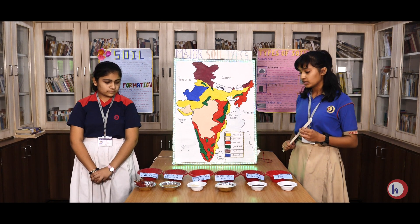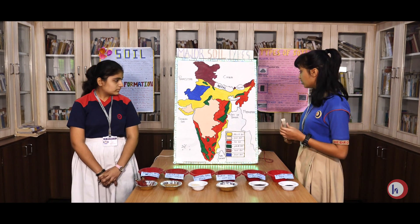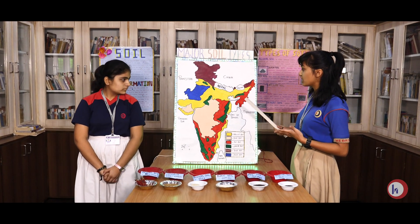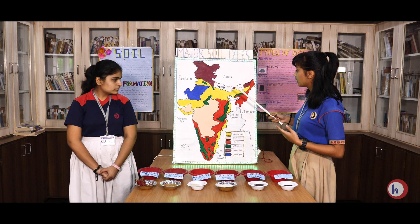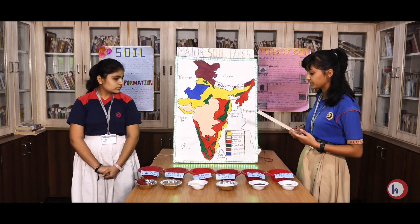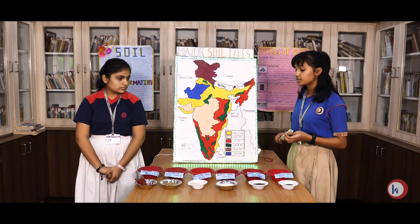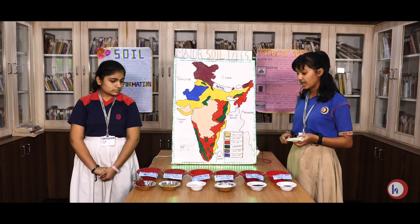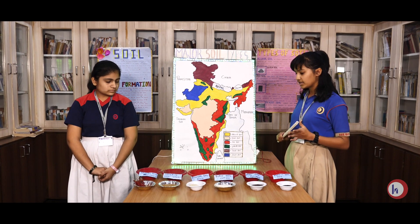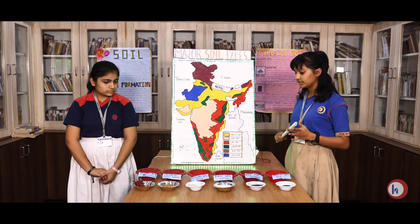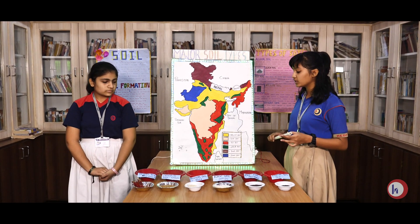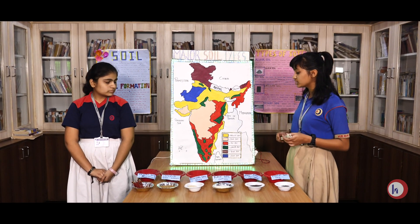Alluvial soil is found in Punjab, Haryana, Bihar, Assam, etc. Crops such as rice, wheat, maize, etc. can be grown in alluvial soil.